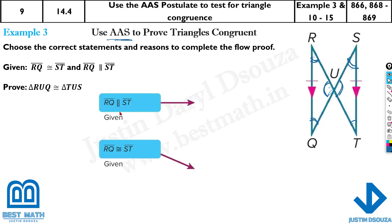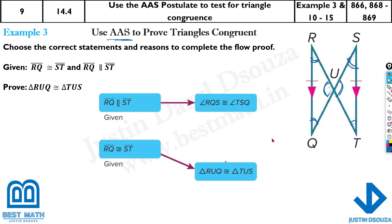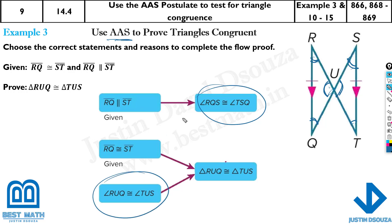Therefore, I can tell they're congruent. Now, angle RQS and angle TSQ are congruent — because they're alternate angles. And angle RUQ and angle TUS are vertical angles. So we have two angles and one side — angle-angle-side. The answer uses alternate interior angles, vertical angle theorem, and the AAS postulate.